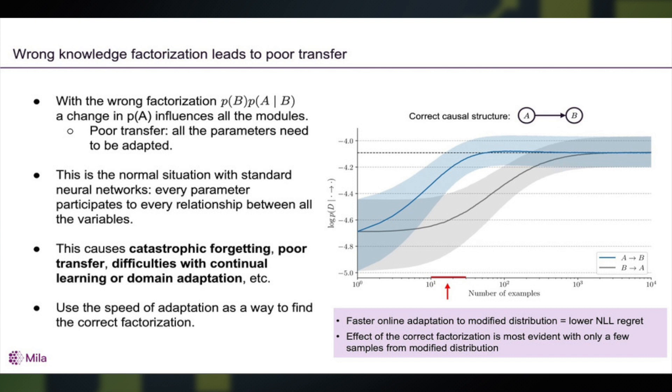So what you see in the figure on the x-axis is the number of examples on the log scale in the transfer setting, and on the y-axis is the log likelihood which we want to increase. What we find is that the correct causal structure converges faster. This is a blue curve that rises faster. So when the number of examples is small, there's actually the greatest differentiation between the correct factorization of the joint and the incorrect one.